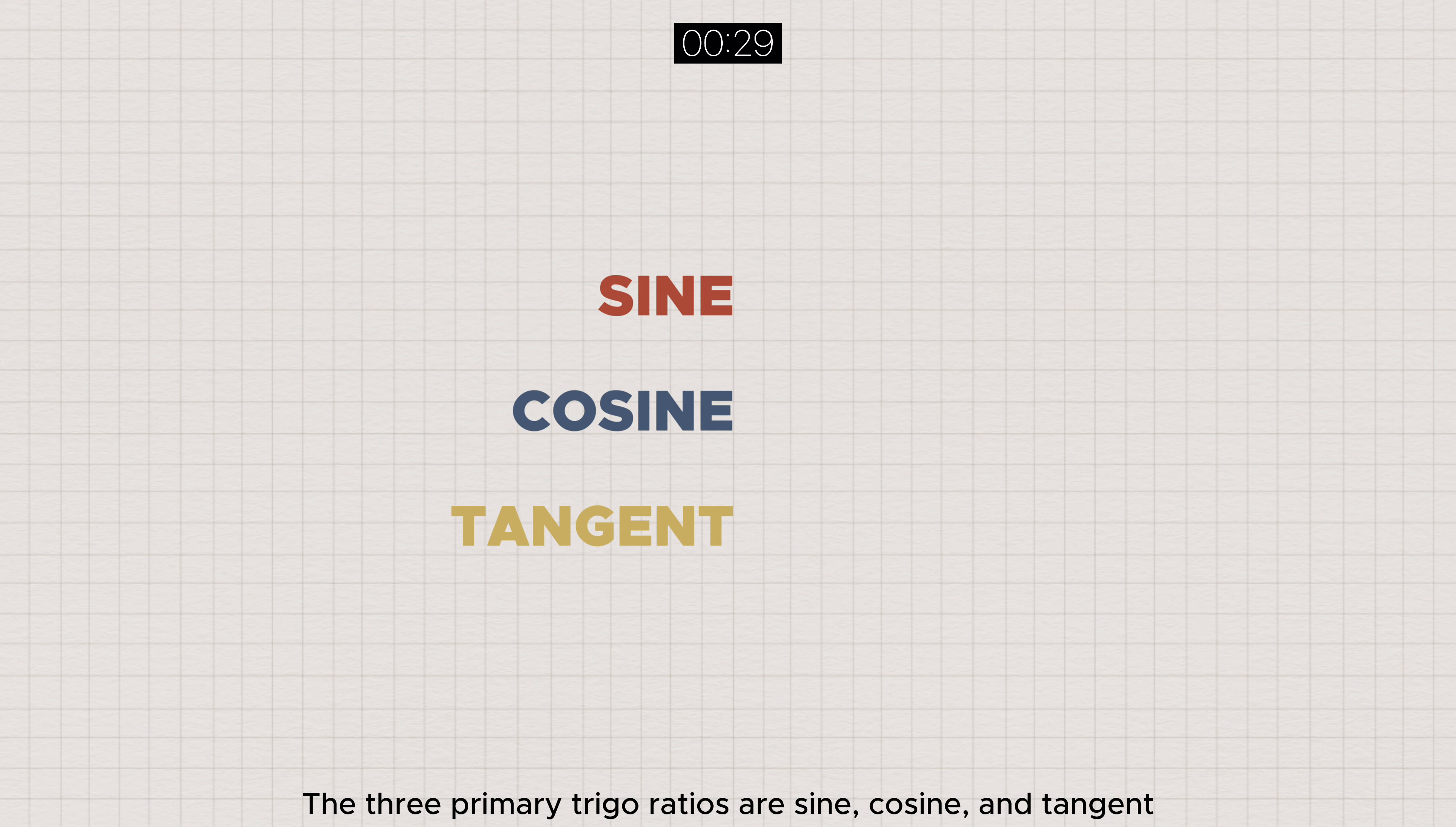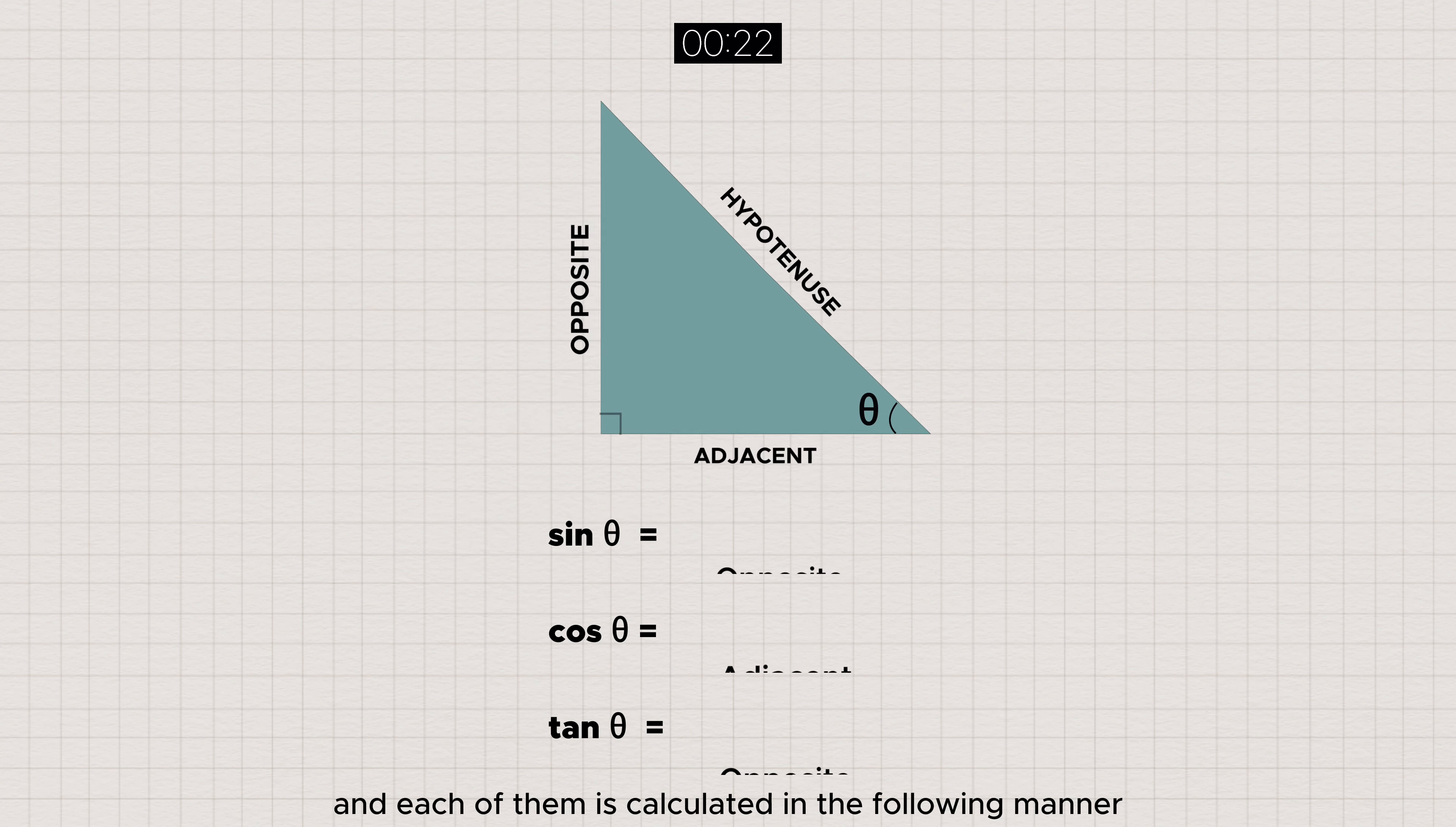The three primary trigon ratios are sine, cosine, and tangent, which are abbreviated as follows, and each of them is calculated in the following manner.